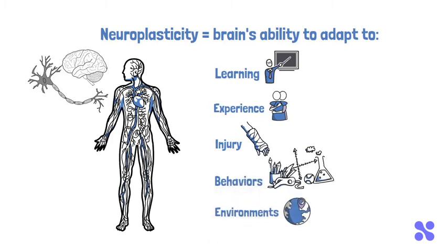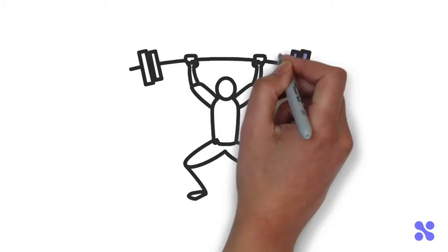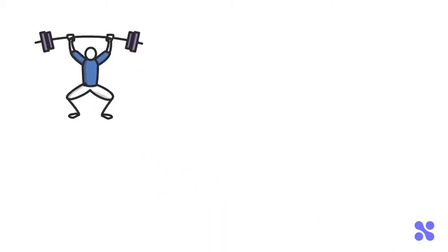Neuroplasticity can be thought of as the muscle building within the brain, where the things we do often we become stronger at.